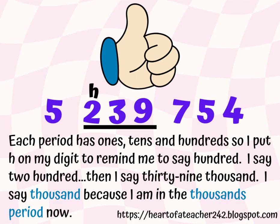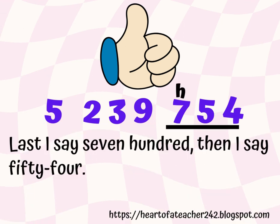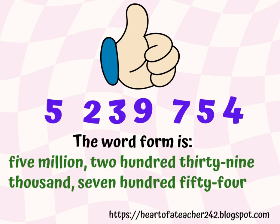Just a reminder — put your h on top of the digit so that you remember to say 100 after you call that digit. Last, I say 700. Notice how I have the h on top of the seven to remind me to say 100 after I say seven. Then I say 54. Here is the word form for this number: five million, two hundred thirty-nine thousand, seven hundred fifty-four.